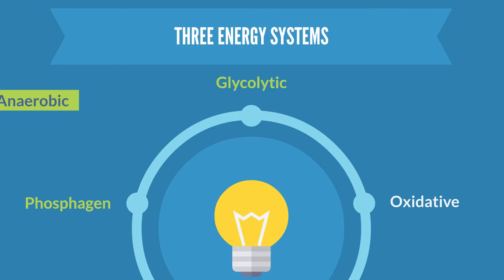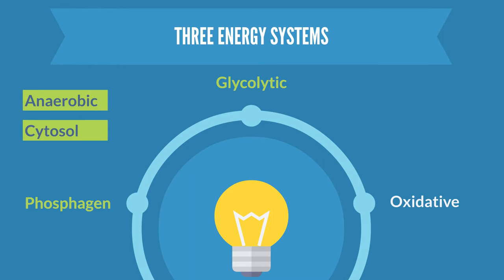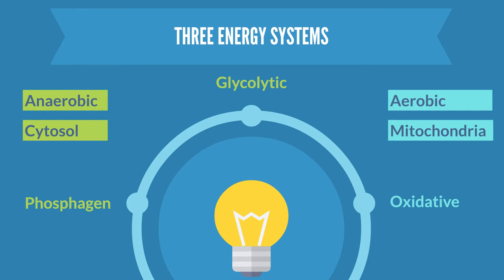The first two systems are anaerobic systems, meaning oxygen is not required to produce ATP. These systems take place in the cell cytosol. The oxidative system is aerobic, meaning oxygen is needed for ATP production, and therefore this system produces ATP more slowly than the other two anaerobic systems. The oxidative system takes place in the cell's mitochondria.